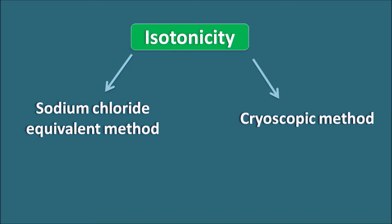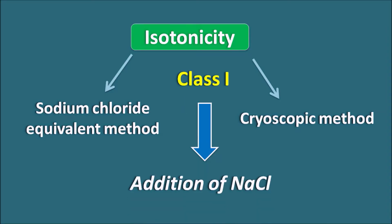Both of these methods are classified as Class 1 methods, in which we are going to add Sodium Chloride externally in order to adjust the tonicity of the solution. Today in this video we will see the Sodium Chloride Equivalent Method — how we can calculate the amount of Sodium Chloride required to produce an isotonic solution — and we will also see a simple formula for this calculation.